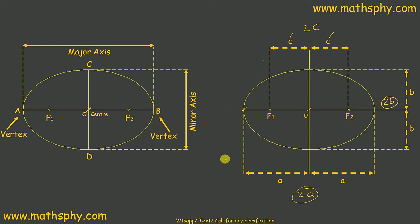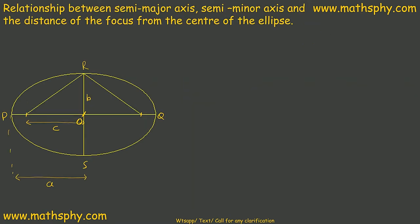We have seen all these things here. Focus to center is C. Semi-minor axis, B and B, total 2B. Semi-major axis, A and A, total is 2A. Same is here.